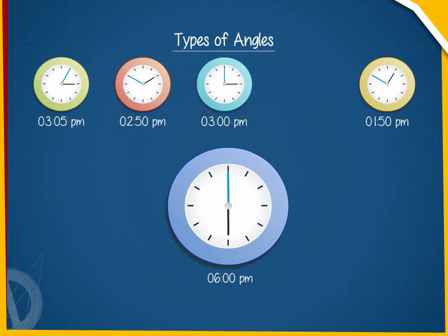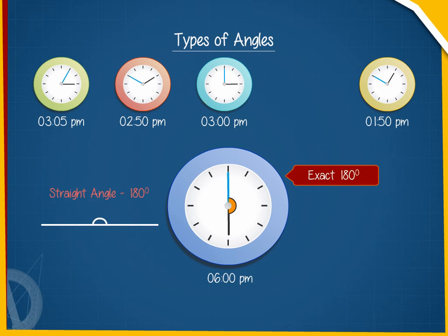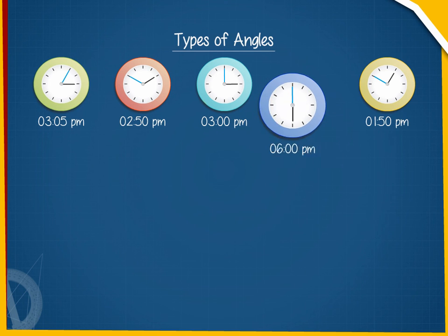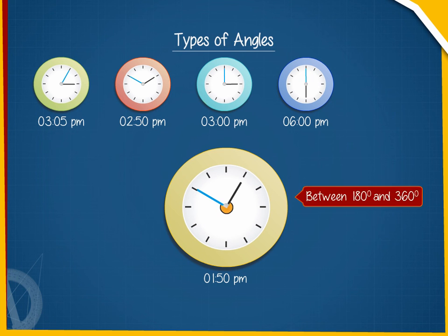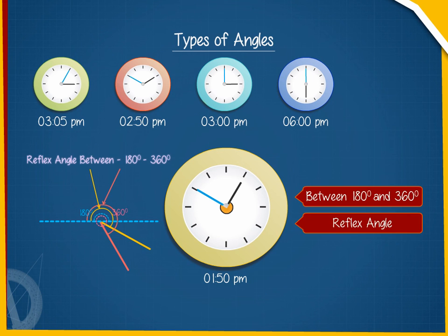At 6 o'clock, the arms appear to be a straight line measuring exactly 180 degrees — it is a straight angle. At 1:50 p.m., the exterior angle outside both the arms is between 180 and 360 degrees. It is called a reflex angle.